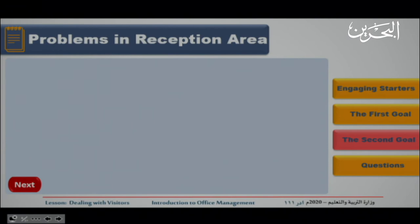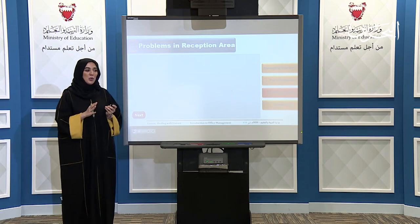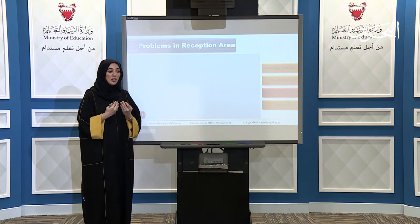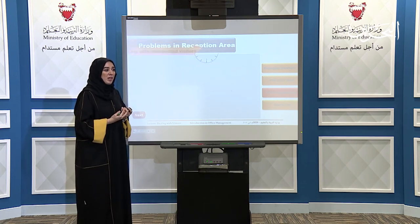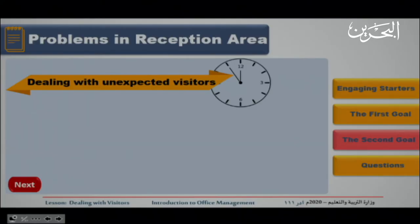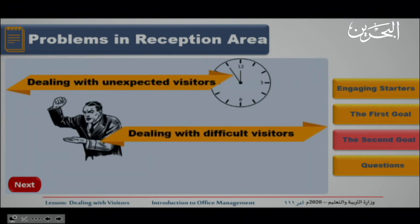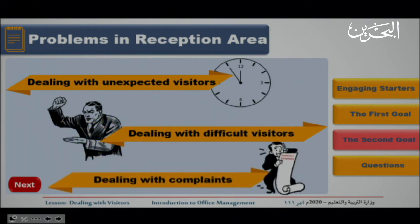Let's move to the second goal: problems in the reception area. The receptionist is like the image of the company — she is the first point of contact. So she will face all the problems. The kinds of problems she will meet include: unexpected visitors, dealing with difficult visitors, and dealing with complaints. We're going to see each of these and how to deal with them.